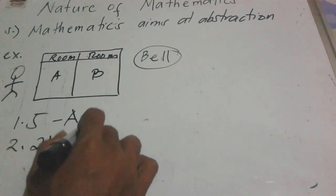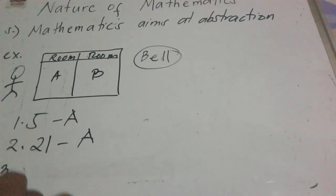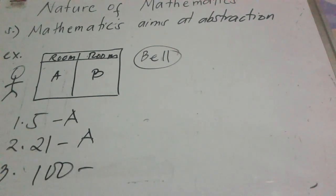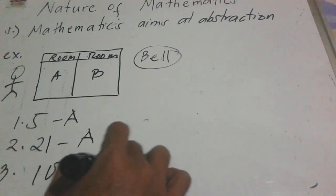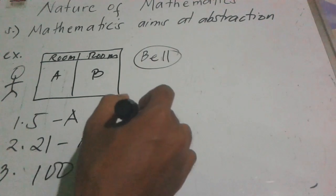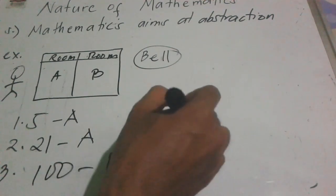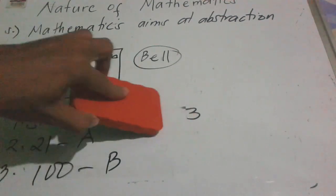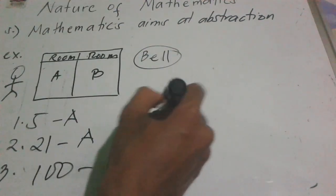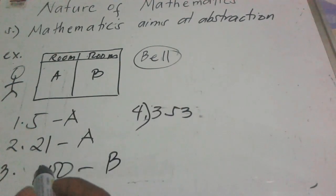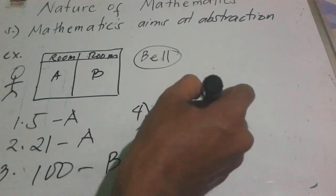Correct — room A. Assuming the bell rings one hundred times, where is Pedro? He is in room B. Next, assuming the bell rings three hundred fifty-three times — where is Pedro now? In room A.